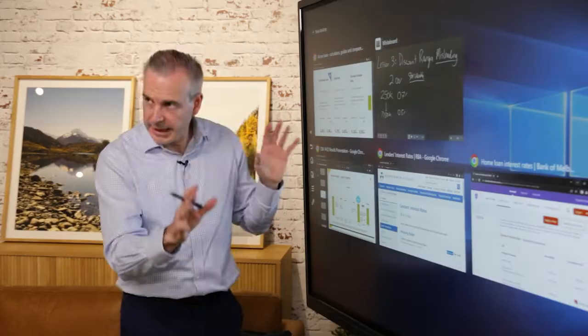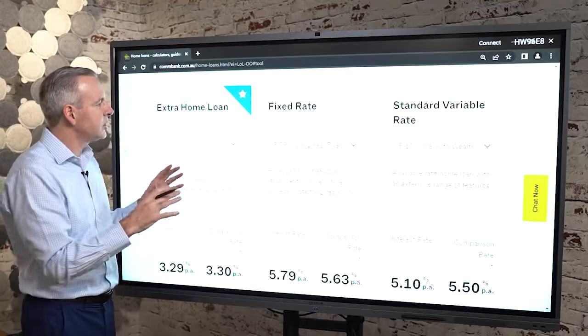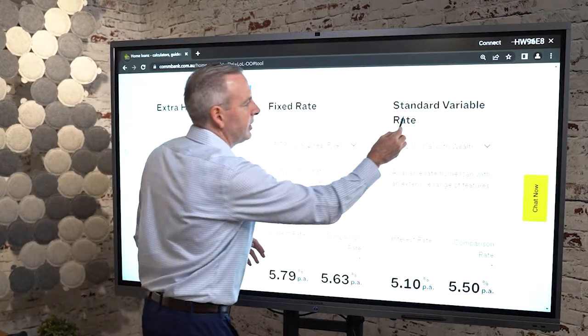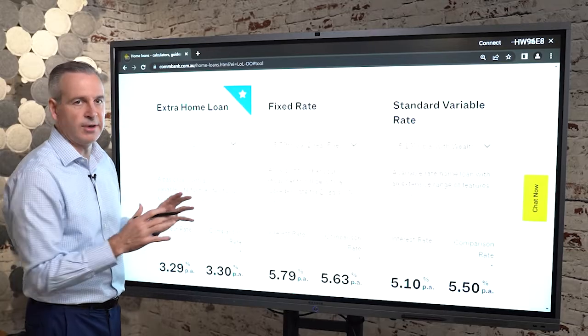So I've just got two major lenders. I'm coming back to the CBA and you can see here that the CBA standard variable rate, the comparison rate is 5.5. The interest rate that they're looking at is 5.1. So that is their standard variable rate.